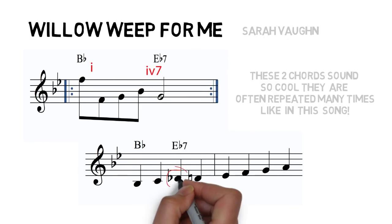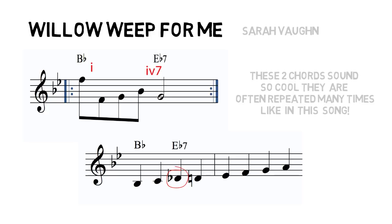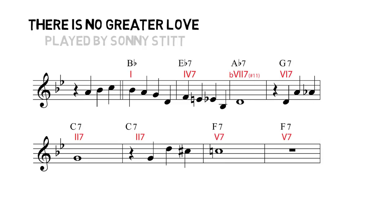Another famous tune that uses these two chords at the beginning is 'There Is No Greater Love,' here played by Sonny Stitt. After the first two chords of B-flat and E-flat seven, the progression continues around the cycle — the next chord can be A-flat seven or D seven, the tritone substitute; both sound good. The last example of this one-to-four progression is in a blues — let's listen to 'Blue Monk' by Thelonious Monk.